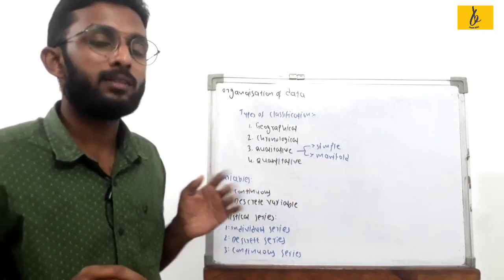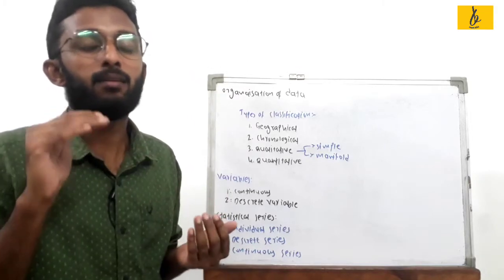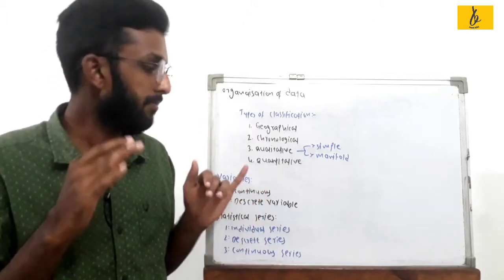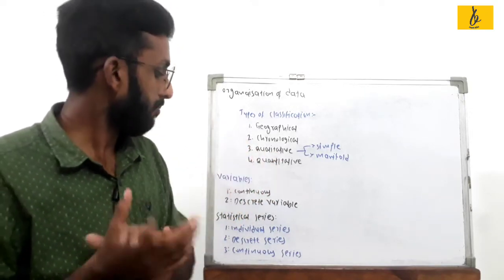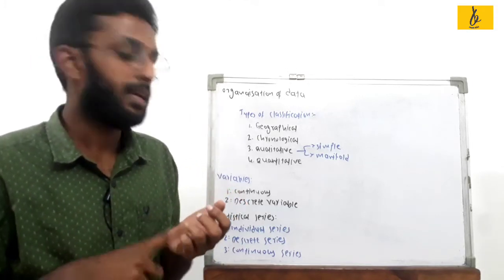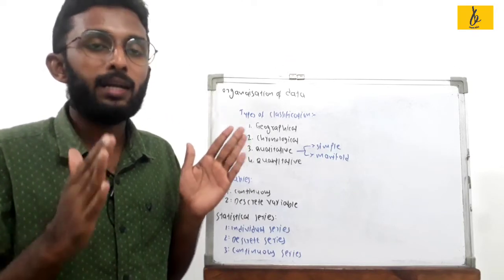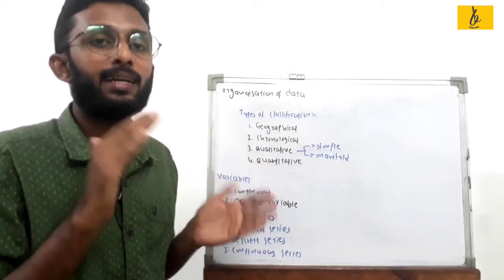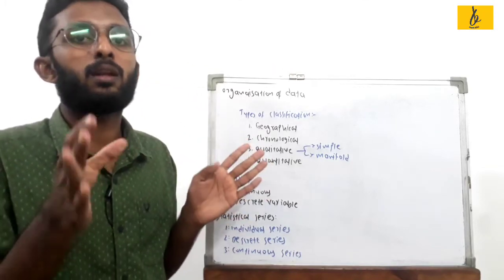Quantitative classification is based on magnitude. When we collect data like height expressed in measurable values, it is called quantitative classification. There are two types of variables: continuous variable and discrete variable.